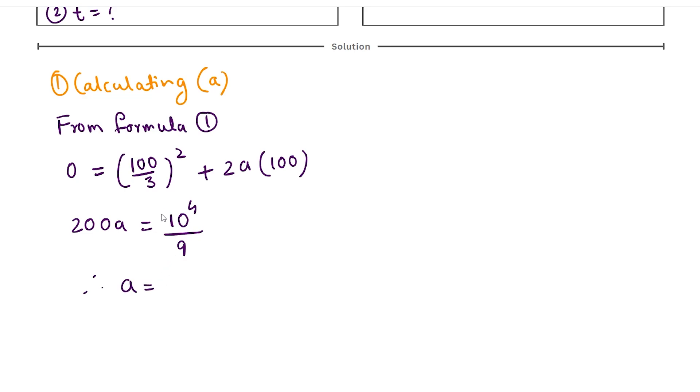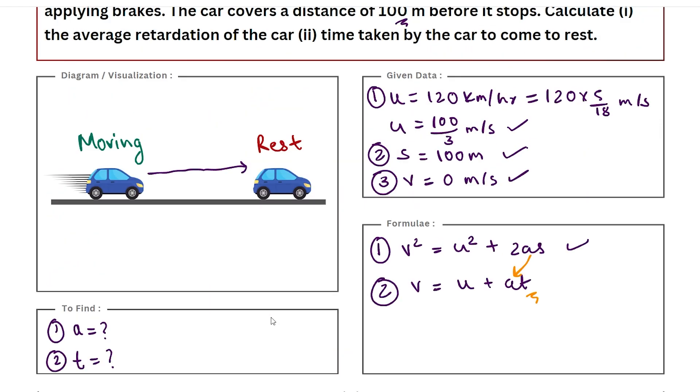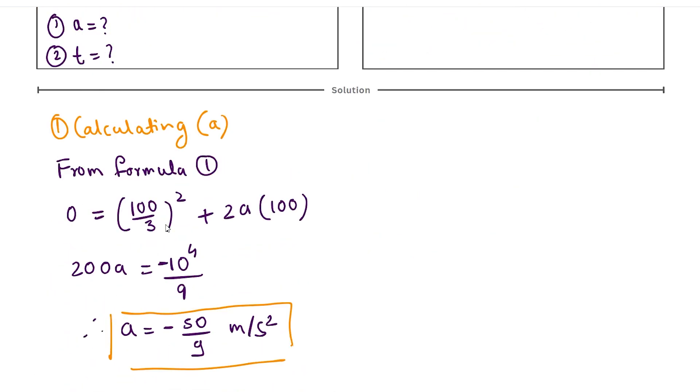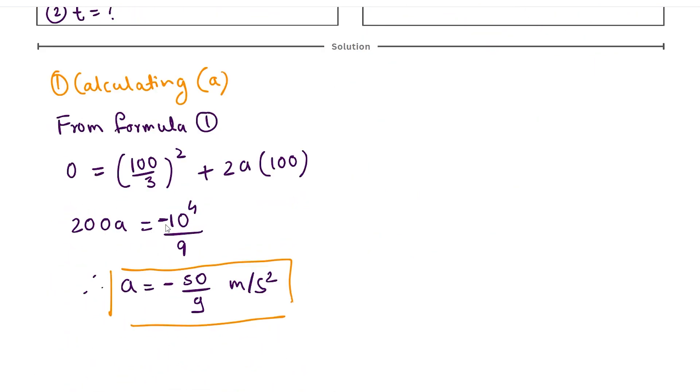And if you further solve it, a comes out to be minus 50 by 9 meter per second squared. Units are very important. You can see that it's negative, and that's quite reassuring because a is not your ordinary acceleration. It is the acceleration applied to resist motion, it is deceleration. Deceleration has to be negative because it is opposing the motion. The fact that we got a negative sign is quite reassuring. It means we have no mistake in our calculation.